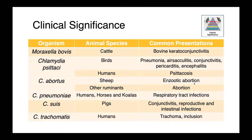There are a number of important diseases associated with these organisms. Moraxella bovis is really associated with keratoconjunctivitis in cattle. Our Chlamydia species cause a diverse set of clinical diseases. Chlamydia psittaci in birds causes pneumonia, air sacculitis, conjunctivitis, pericarditis, and encephalitis — and in humans it causes psittacosis. It has a very broad host range. Chlamydia abortus causes enzootic abortion of ewes and abortion in other ruminant species. Chlamydia pneumoniae causes primarily respiratory tract infections, mostly in people but also in horses and koalas. Chlamydia suis causes conjunctivitis, reproductive and intestinal infections in pigs. Chlamydia trachomatis is a cause of sexually transmitted infection in people and has a fairly narrow host range.